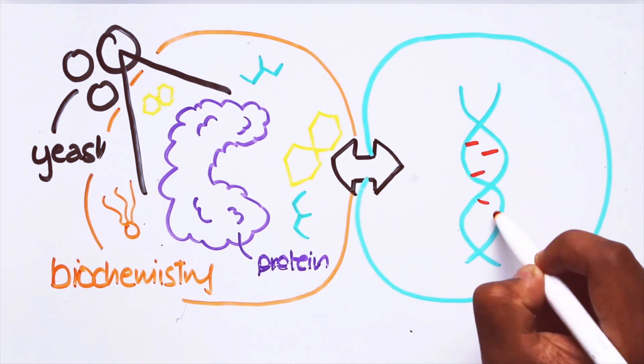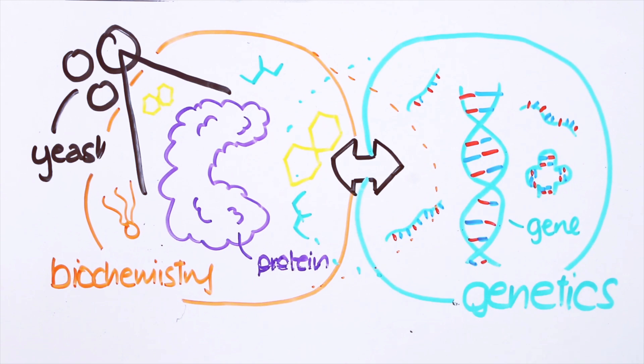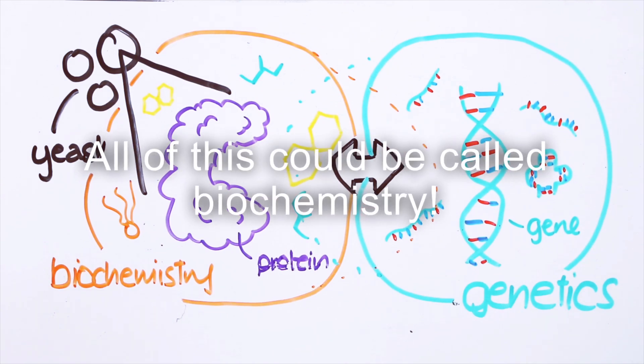In parallel, genes became central to genetics. These fields overlap a lot, so it has become common to refer to them together as biochemistry.